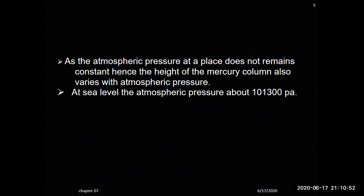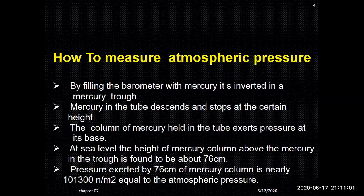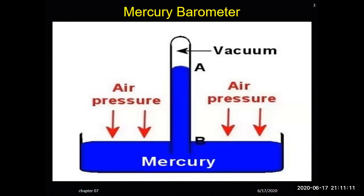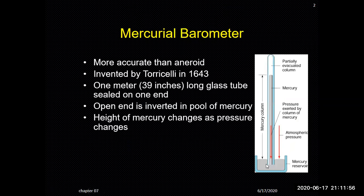In summary, atmospheric pressure does not remain constant and the height of the mercury column varies with it. The mercury barometer works on the simple principle that you fill a tube with mercury, invert it into a trough containing mercury, and the mercury moves down until the force exerted by the column equals the force exerted by air molecules on the surface. At this equilibrium, there is no further net motion of mercury, and the height is read as the atmospheric pressure. Thank you all for your patience; I hope you have understood today's topic.